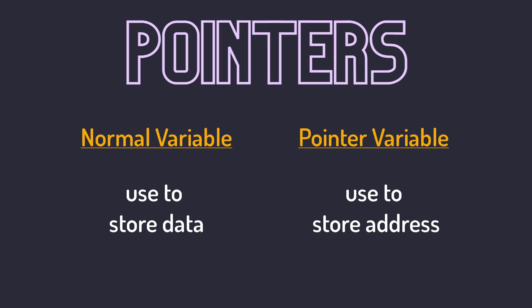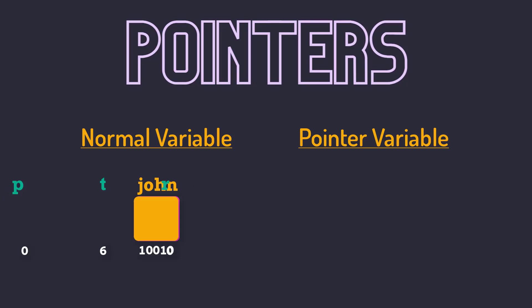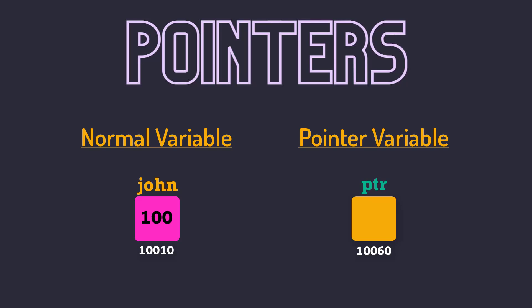A normal variable is used to store data only, whereas pointer variables are used to store the addresses of other variables. Let's assume John is a normal variable whose address is 10010 and having a value of 100. Whereas ptr is a pointer variable having some random address, which we can use to store the address of John. Here we can differentiate how a normal variable stores data while a pointer variable stores addresses.